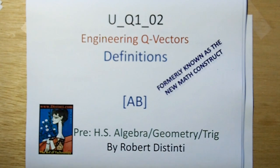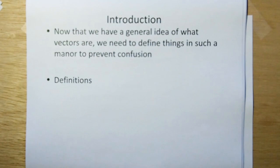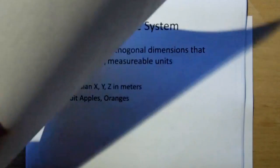Hi, welcome to Distinti University Engineering Q-Vectors. This is the course on definitions. From the previous two installments of this course, we've learned and got a general idea of what vectors are. Vectors are a direction and a magnitude. But we need to define things in such a manner to prevent confusion, so we're going to do some definitions.